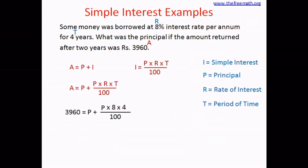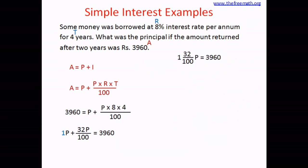On the right-hand side numerator, 8 times 4 equals 32, so we get 32P. Swapping the sides, the equation becomes P plus 32P divided by 100 equals 3,960. This is just like solving any single variable equation. The first P has an implied coefficient of 1, so the equation is 1P plus 32 over 100 times P equals 3,960. Adding both P terms gives 1 and 32 over 100 times P equals 3,960.